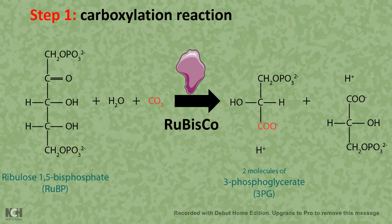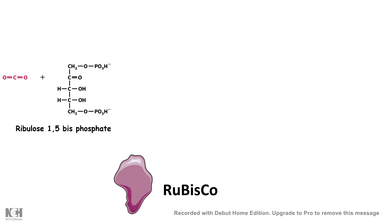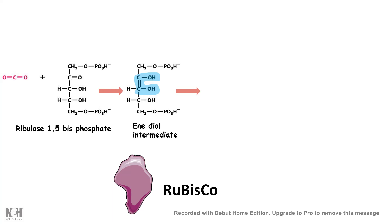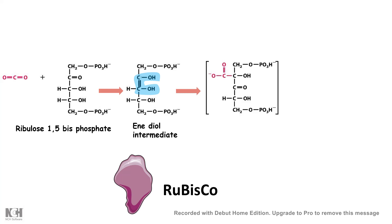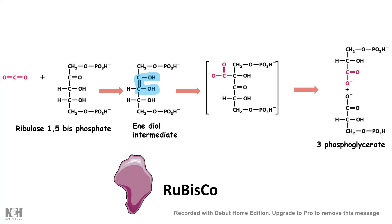Let's look at this process in a bit more detail. The first step catalyzed by Rubisco is carboxylation, and it occurs via an enediol intermediate — you can see a double bond flanked by two alcohols. The carbon dioxide is incorporated into ribulose bisphosphate, and followed by a hydrolysis step, it forms two molecules of 3-phosphoglycerate. So 3-phosphoglycerate is the product of carbon fixation in the Calvin cycle.